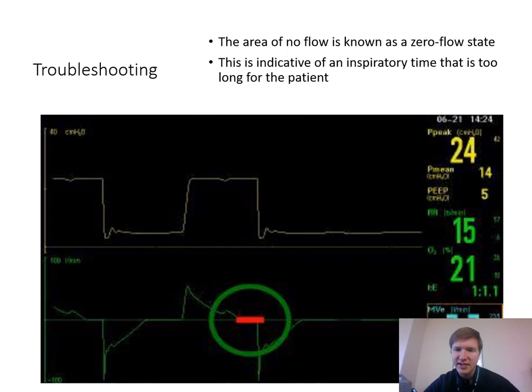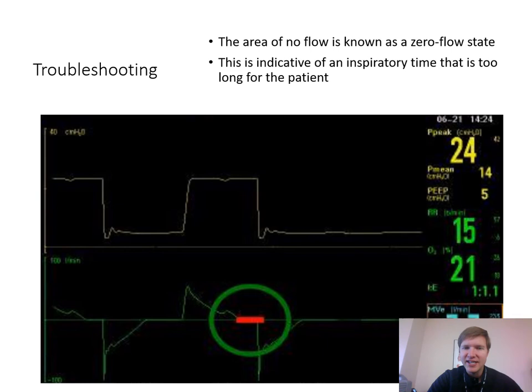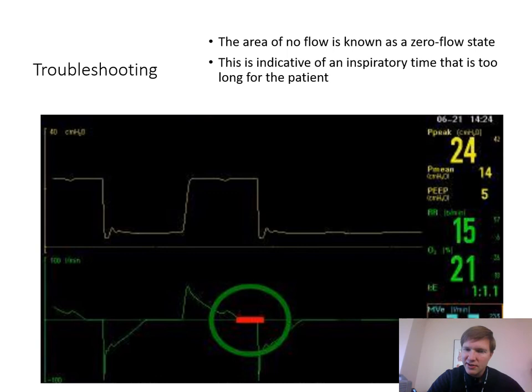The area of no flow is known as zero flow straight state. This is indicative of an inspiratory time that is too long for the patient — sounds like a test question. It could be causing patient asynchrony as well. So this is a sign you may need to decrease the inspiratory time, because it's so long it created a zero flow state.